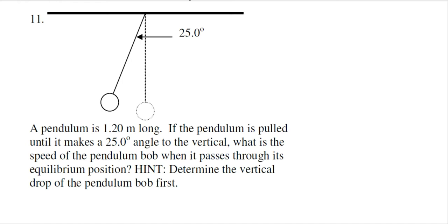What we see here is a pendulum. We know the pendulum's length and the angle it makes to the vertical. We want to know the speed of the pendulum bob as it passes through the equilibrium position — the very bottom. It tells us to determine the vertical drop of the pendulum bob first, as a hint.